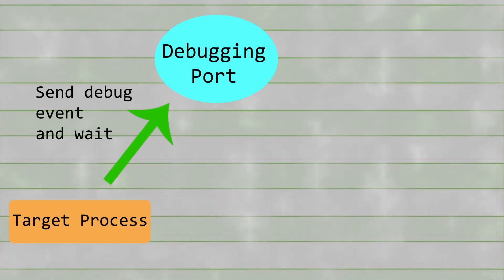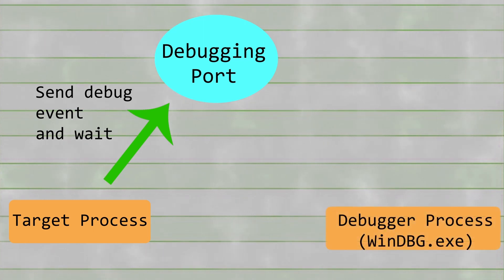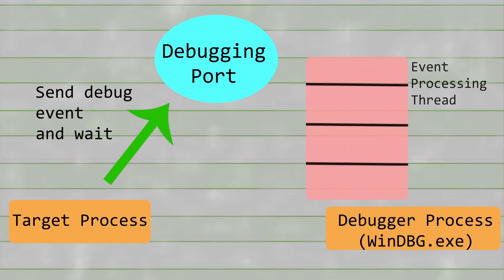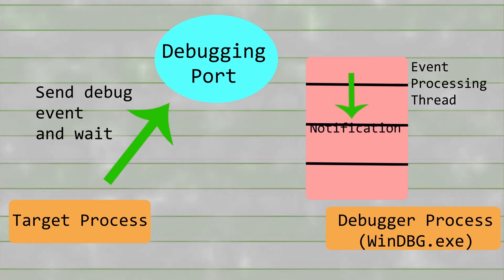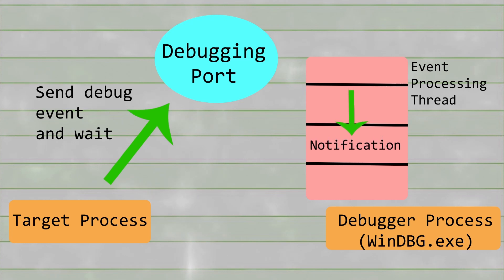How the debugging works looks like this in memory. The target process will send debug events to a debugging port. The debugger process, in this case WinDebug.exe, has a thread that processes those messages. The messages can be notifications of interrupts, events, exceptions, or even commands for the debugger itself.